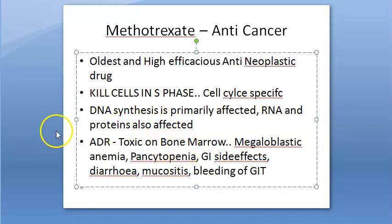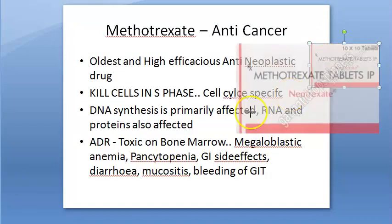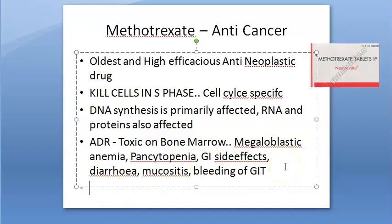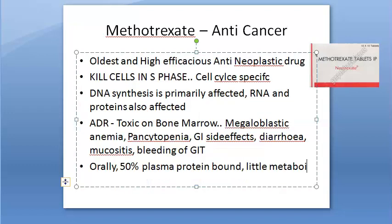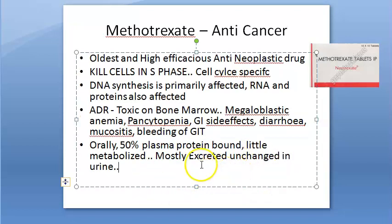Regarding pharmacokinetics: methotrexate is given orally as tablets. It is approximately 50% plasma-bound, undergoes very little metabolism, and is mostly excreted unchanged in urine. Because it is minimally metabolized, renal excretion is the primary elimination route.